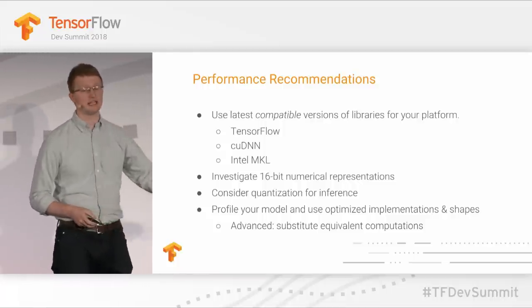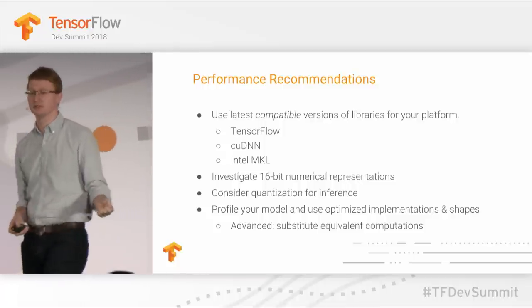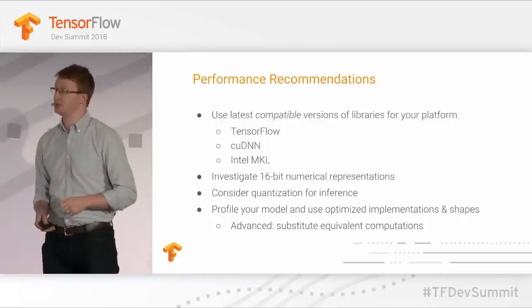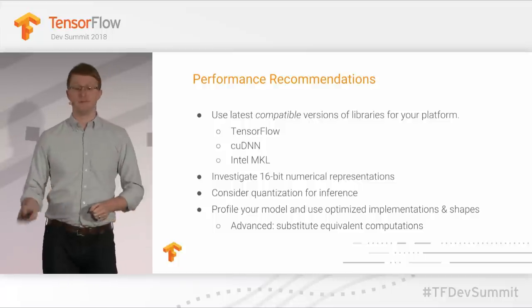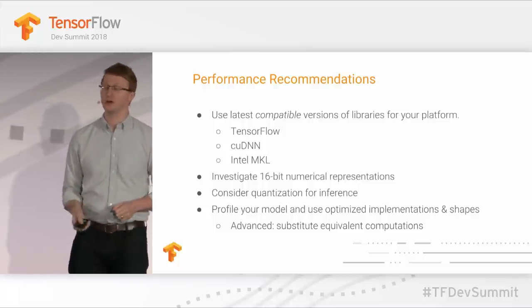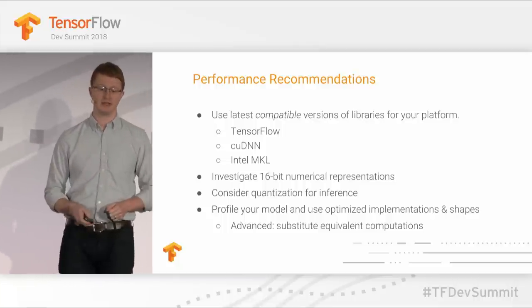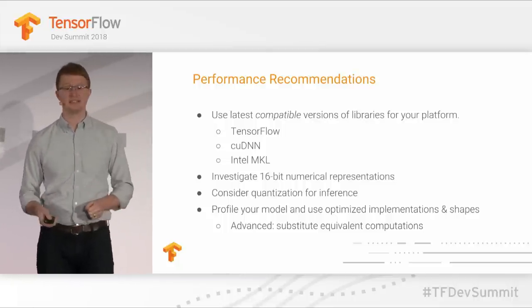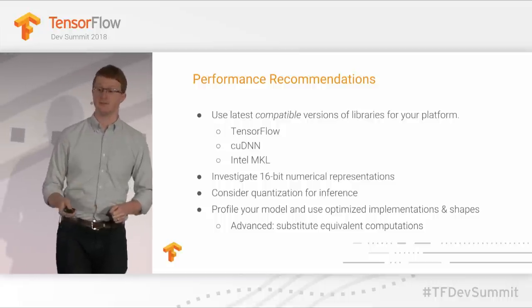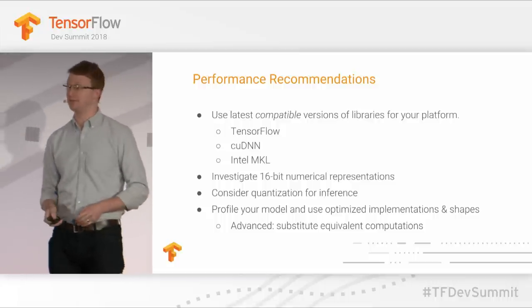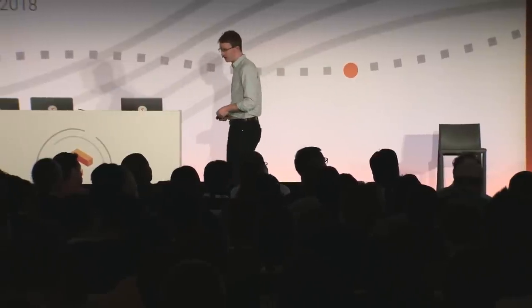You need to use the latest version of TensorFlow — we're constantly working on performance improvements — as well as the latest versions of cuDNN and Intel MKL. If you still want better performance, investigate 16-bit numerical representations; there's a lot of potential performance advantage there. If you're doing inference, TensorRT is available for NVIDIA platforms and can help quantize and make inference really fast. As a really advanced technique, if a particular computation is a bottleneck, you can try substituting it with something computationally faster, but be very careful as you may change the quality of your model.